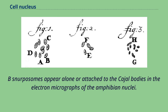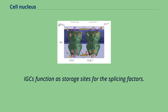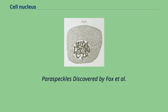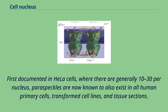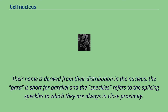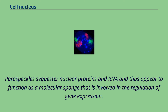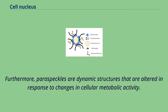Paraspeckles, discovered by Fox et al. in 2002, are irregularly shaped compartments in the interchromatin space of the nucleus. First documented in HeLa cells, where there are generally 10 to 30 per nucleus, paraspeckles are now known to also exist in all human primary cells, transformed cell lines, and tissue sections. Their name is derived from their distribution in the nucleus — 'para' is short for parallel and 'speckles' refers to the splicing speckles to which they are always in close proximity. Paraspeckles sequester nuclear proteins and RNA and thus appear to function as a molecular sponge involved in the regulation of gene expression. Furthermore, paraspeckles are dynamic structures that are altered in response to changes in cellular metabolic activity.